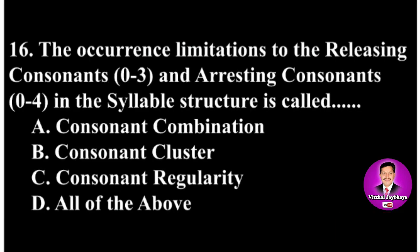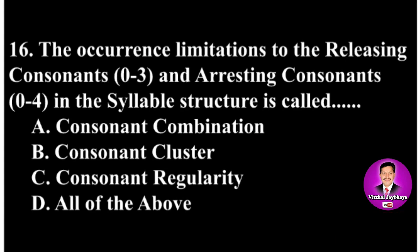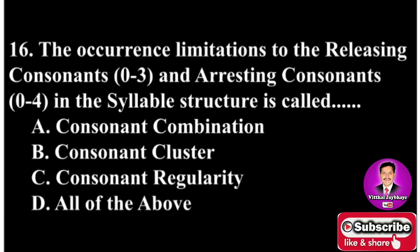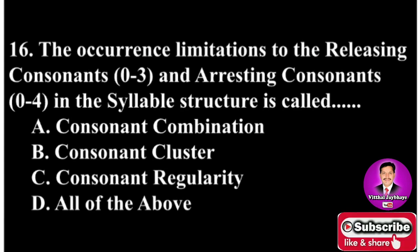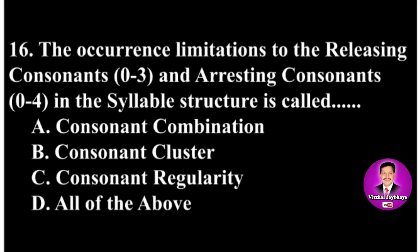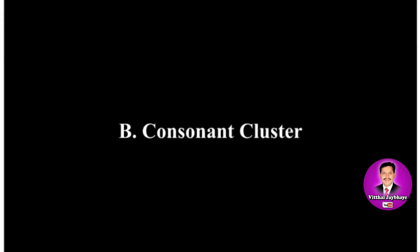Next MCQ: The occurrence limitations to the releasing consonants (0 to 3) and arresting consonants (0 to 4) in the syllable structure is called dash-dash-dash. Options are A: consonant combination, B: consonant cluster, C: consonant regularity, D: all of the above. The correct answer is B — consonant cluster.